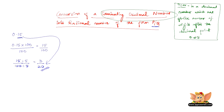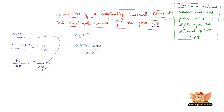Let us convert 0.675, another terminating decimal number, into the rational number of the form P by Q. First we convert 0.675 into a fraction. The number of digits after the decimal point is 3, so we multiply and divide 0.675 by 1000. So 0.675 into 1000 is 675 divided by 1000.